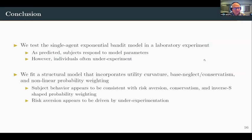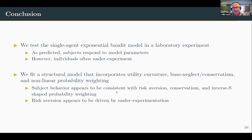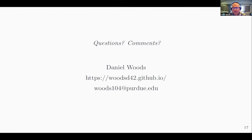To wrap up: we test the single agent exponential bandit model in a lab experiment. As predicted, subjects respond to model parameters in the expected direction, but they often under-experiment. We fit a structural model incorporating behavioral factors — utility curvature, base rate conservatism, and nonlinear probability weighting — and find that subject behavior is consistent with risk aversion, conservatism, and inverse S-shaped probability weighting, with risk aversion appearing to be the main driver of under-experimentation. Thank you very much.